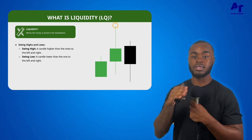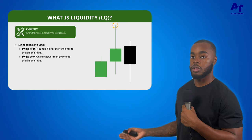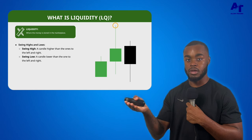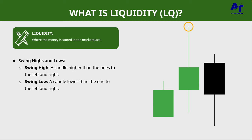A swing high is a candle that has a lower high to the left and a lower high to the right of it, and vice versa for a swing low — a candle with a higher low to the left and a higher low to the right. That middle candle would be a swing high, and that is liquidity. Books and previous trading methods taught traders to place entries, stop losses, or take profits at swing highs and lows — so that is why the algorithm is designed to go there. It's all designed to go against human psychology.